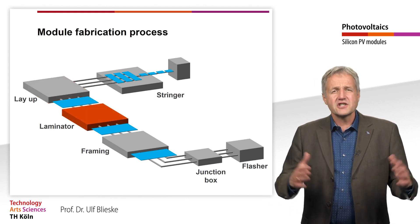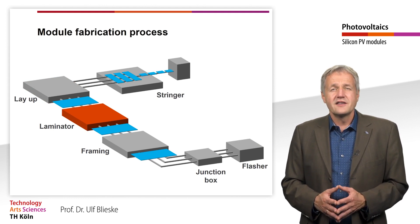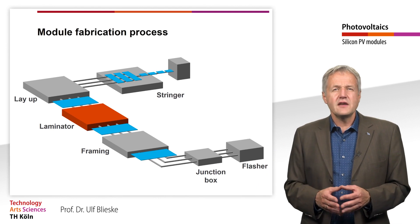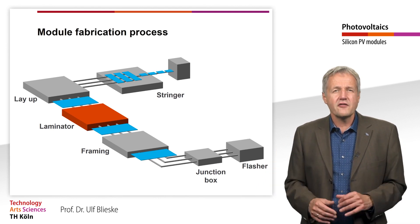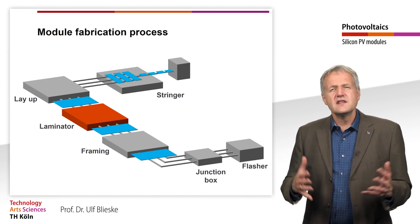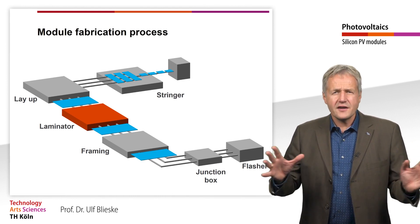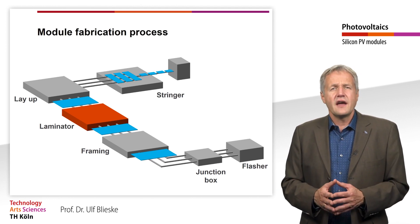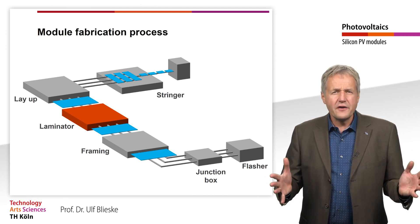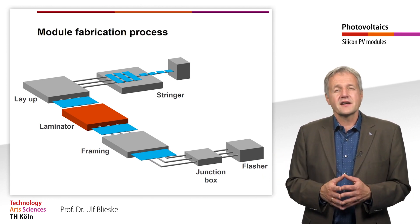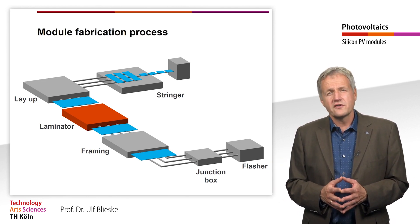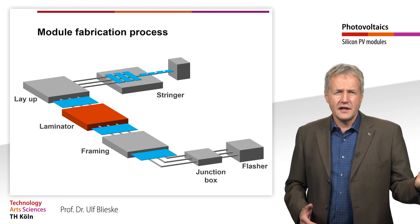The stack is then finished with a second EVA film and a backsheet film. In the next step, this module package is placed in the laminator, where it is heated to about 150 degrees C. During this process, the EVA film melts and flows into the cavities between the cells. As it cures, the EVA film bonds the glass, the cells, and the backsheet together and ensures that the components are optically coupled. This bond is very durable and difficult to separate again later. This is a particular problem for the recycling of solar modules, which we will look at in more detail later.